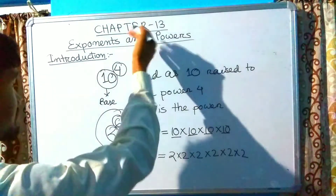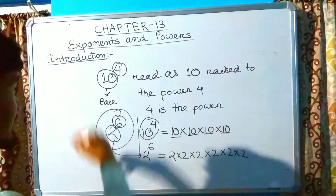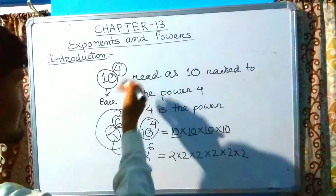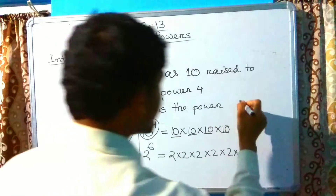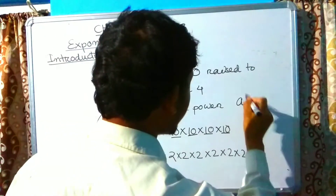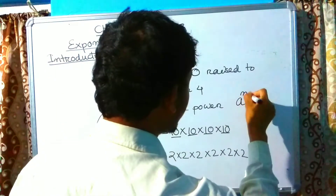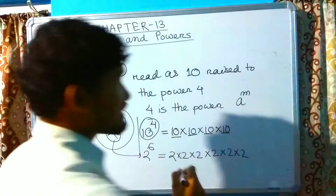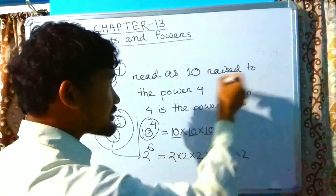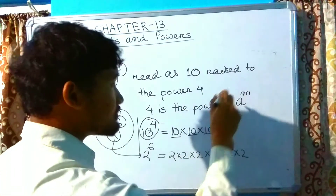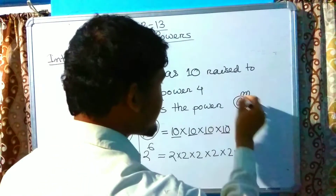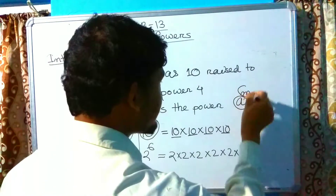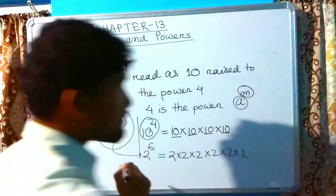In general, the exponential form is written as a raised to the power m. For example, 10 raised to the power 4, or 10 raised to the power 6, or a raised to the power m — where a is the base and m is the power.